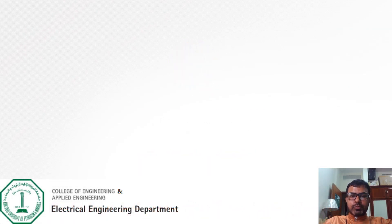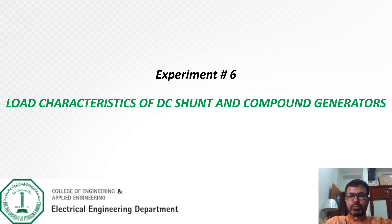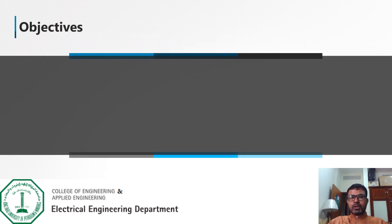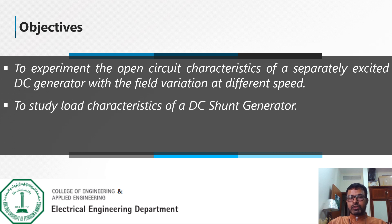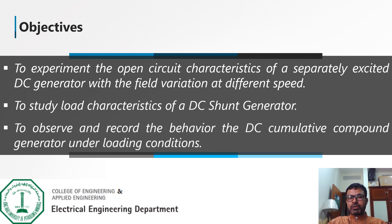Today we will demonstrate experiment number six: load characteristics of DC shunt and compound generators. We have three objectives. Our first objective is to examine the open circuit characteristics of a separately excited DC generator. Our second objective is to study the load characteristics of a DC shunt generator, and our third objective is to observe and record the behavior of a cumulative compound DC generator under loading conditions.